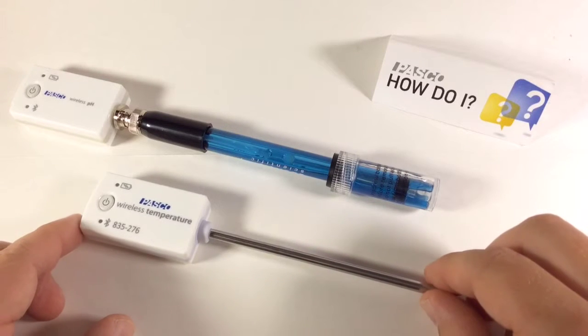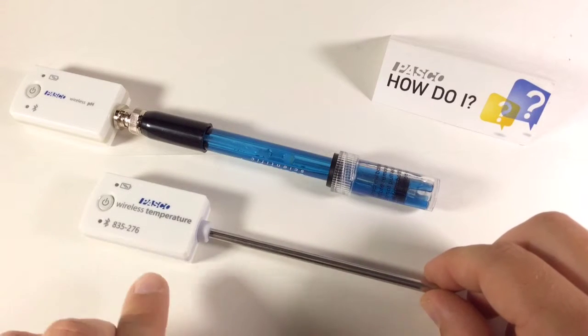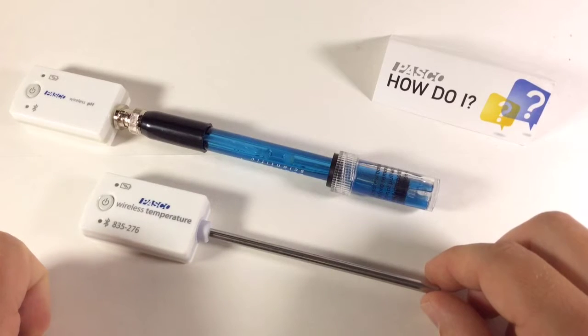How do I replace the battery of a PASCO wireless sensor that uses coin cell batteries, such as the wireless temperature and wireless pH sensors?